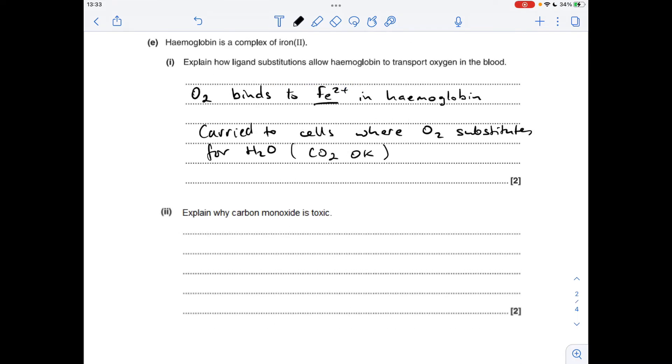Part two, explain why carbon monoxide is so toxic. If you remember carbon monoxide is also a ligand, it can form a much much stronger coordinate bond with the Fe2+ and once it's on it doesn't come off. So the blood's ability to carry oxygen is severely reduced.